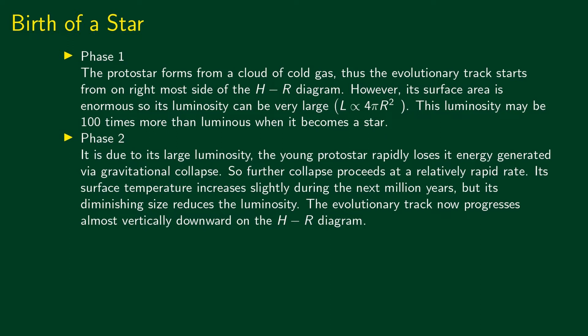In phase 1, a protostar forms from a cloud of cold gas. The evolutionary track starts from the rightmost side of the HR diagram, since it is a collection of cool gases. However, its surface area is enormous, so its luminosity can be very large. Luminosity is proportional to 4πR², and also depends on T raised to the power 4. This luminosity may be 100 times more luminous than when it eventually becomes a star.